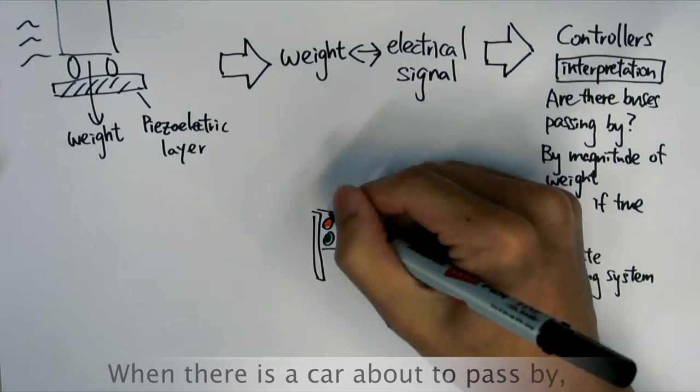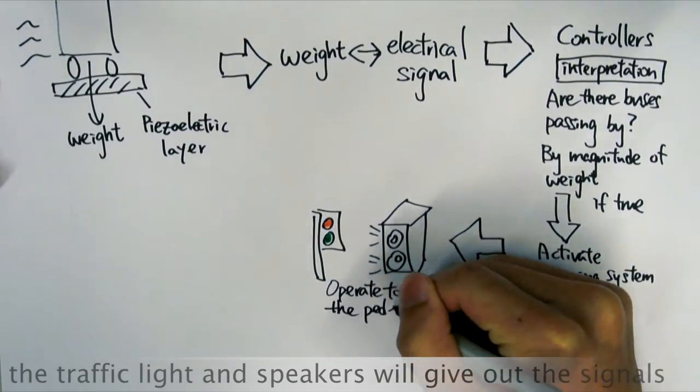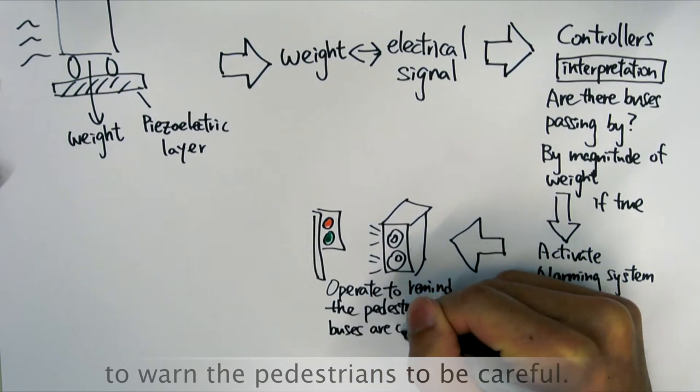When there is a car about to pass by, the traffic light and speakers will give out signals to warn the pedestrians to be careful.